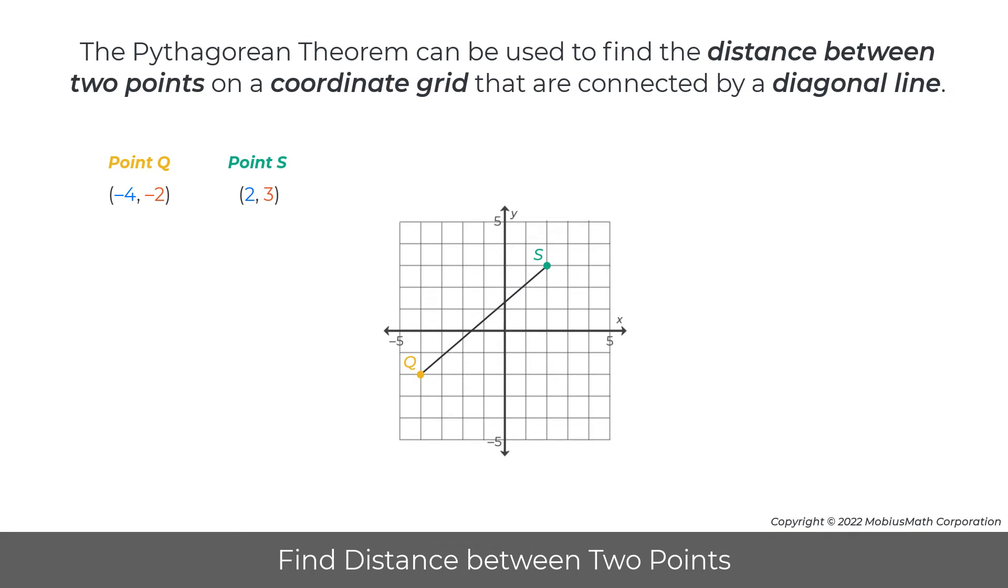The diagonal line connecting the two points can be used to draw a right triangle with one of the legs spanning the horizontal distance and the other leg spanning the vertical distance.